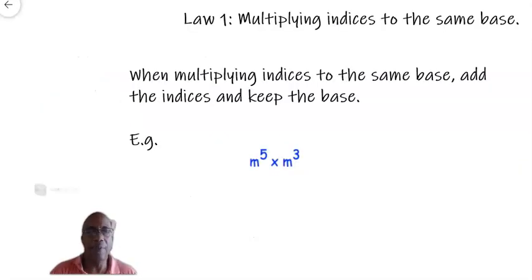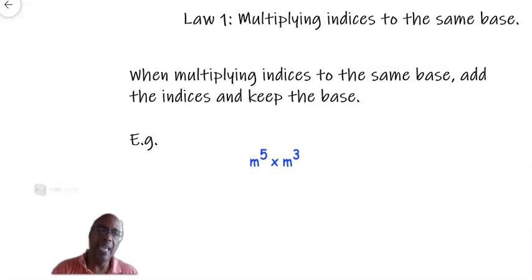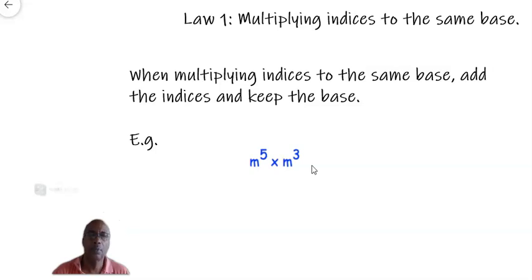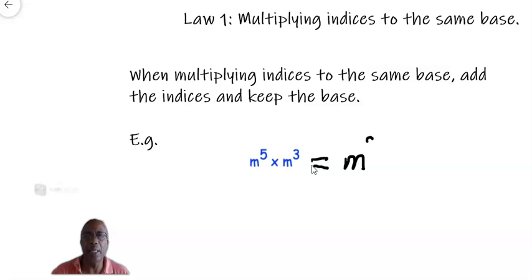That is the first law: when multiplying indices to the same base, you simply add the indices and keep the base. So m to the power of 5 times m cubed equals — we keep the base m and add the indices 5 plus 3 — and that is equal to m to the power of 8.